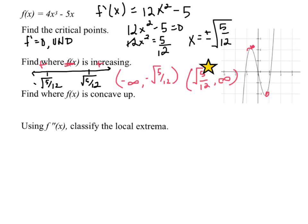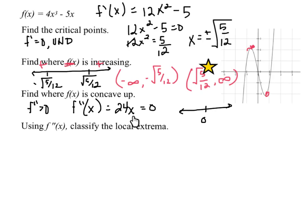Now, concave up — we're looking for where the second derivative is greater than zero. The second derivative would be 24x. The only point of interest, setting this equal to zero, is zero. Doing sign analysis of the second derivative: plugging in a negative number, 24 times a negative is negative; plugging in a positive number, 24 times that number is positive. So, we are concave up from zero to infinity, and concave down from negative infinity to zero.